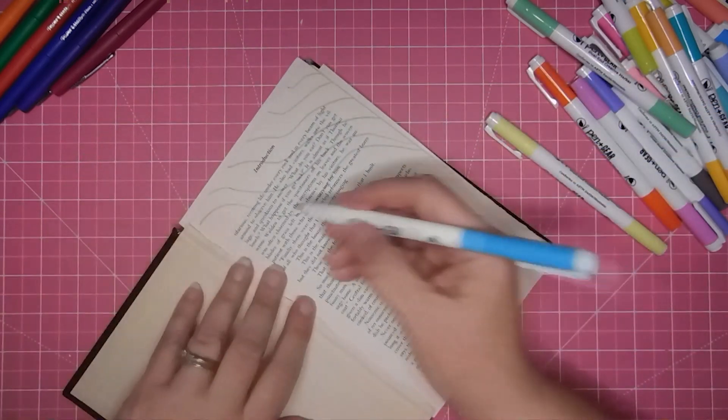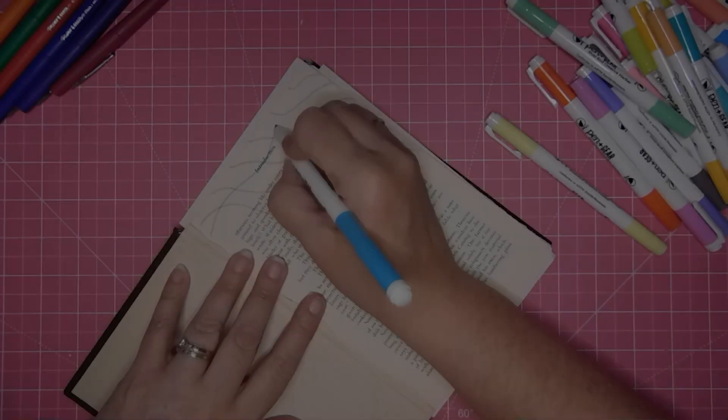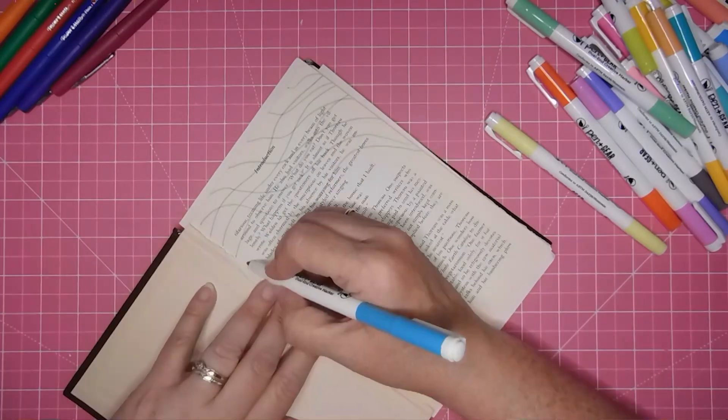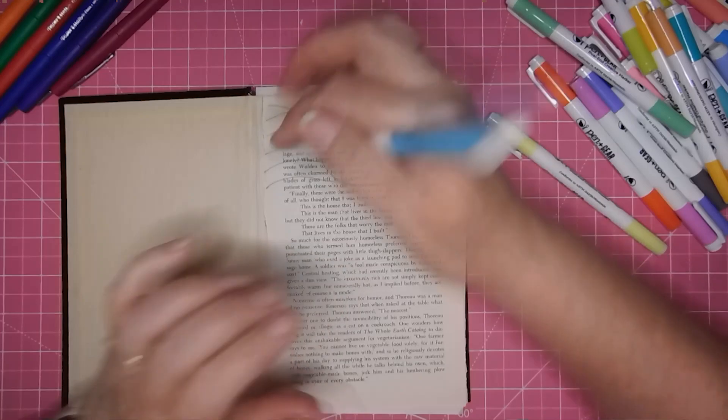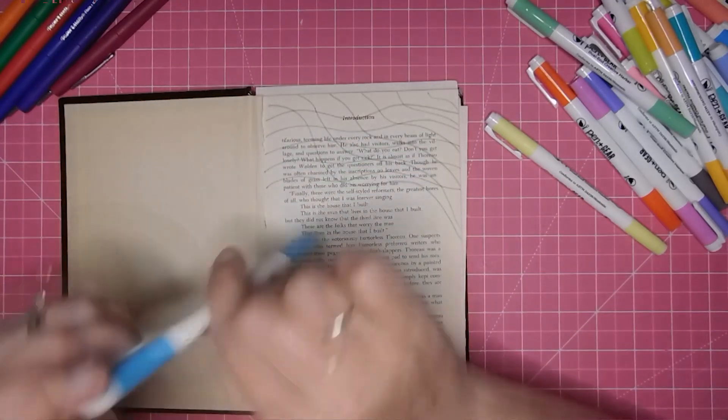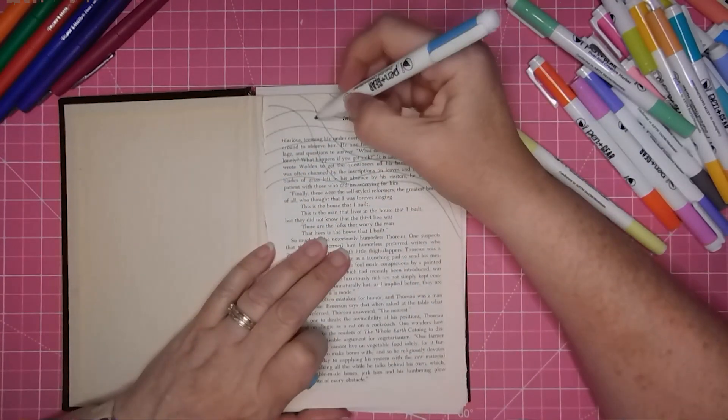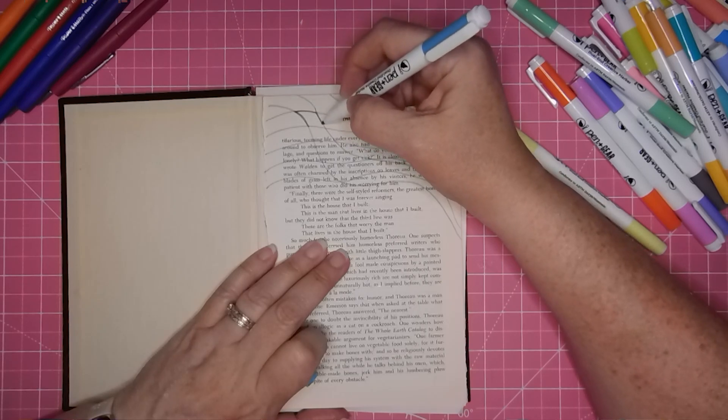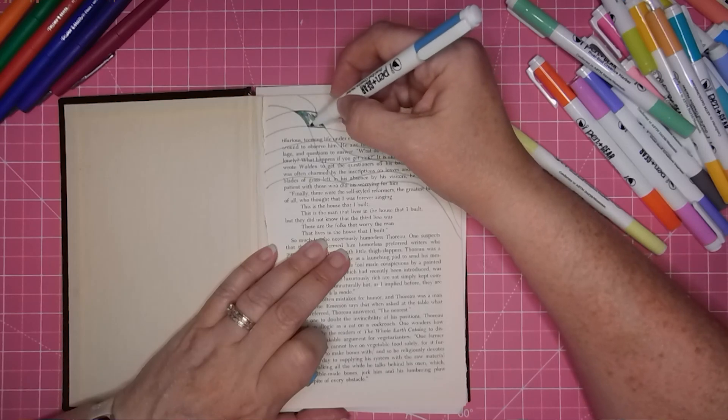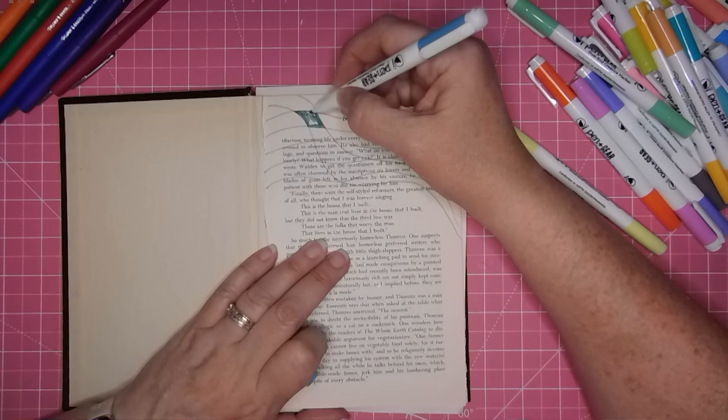And then I want to go across this way. And then what I like to do, and I would probably come back with the other side, is color these in every other one. And this would be, you know, something you'd want to do in front of the TV. It doesn't have to be a fast project.